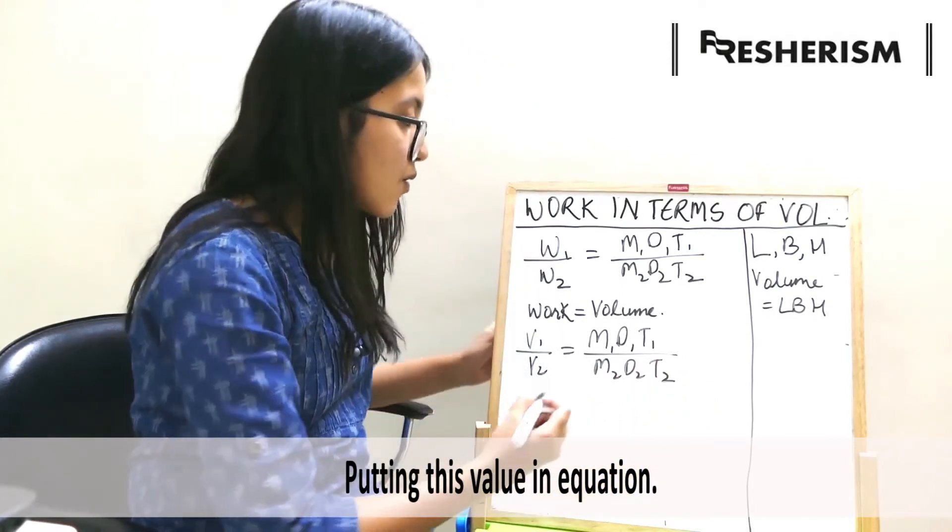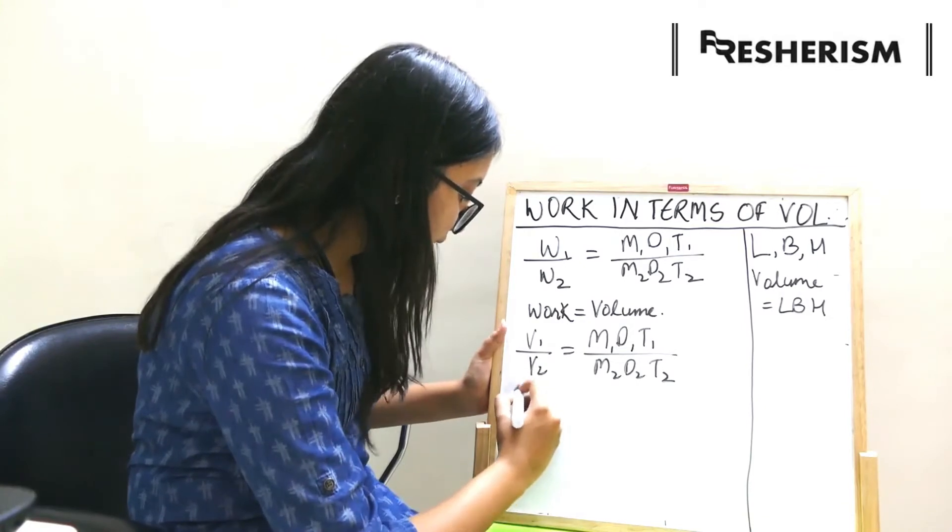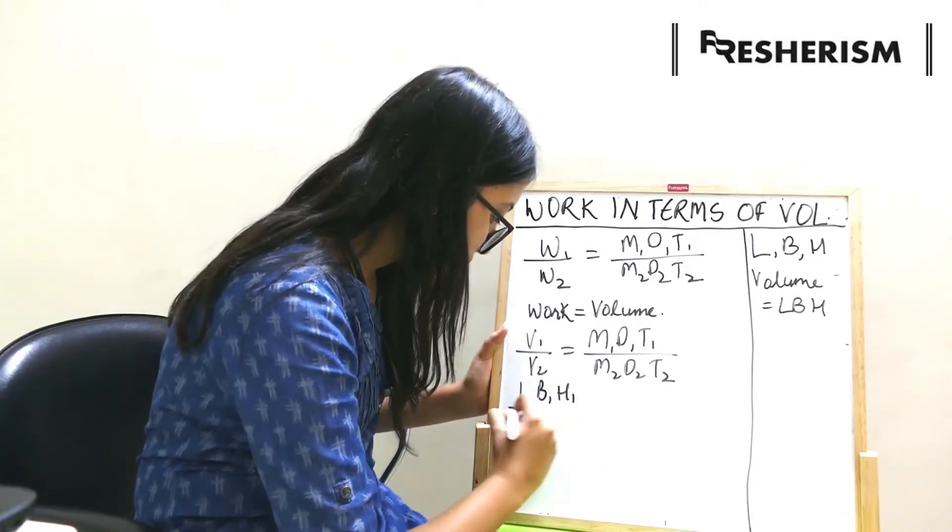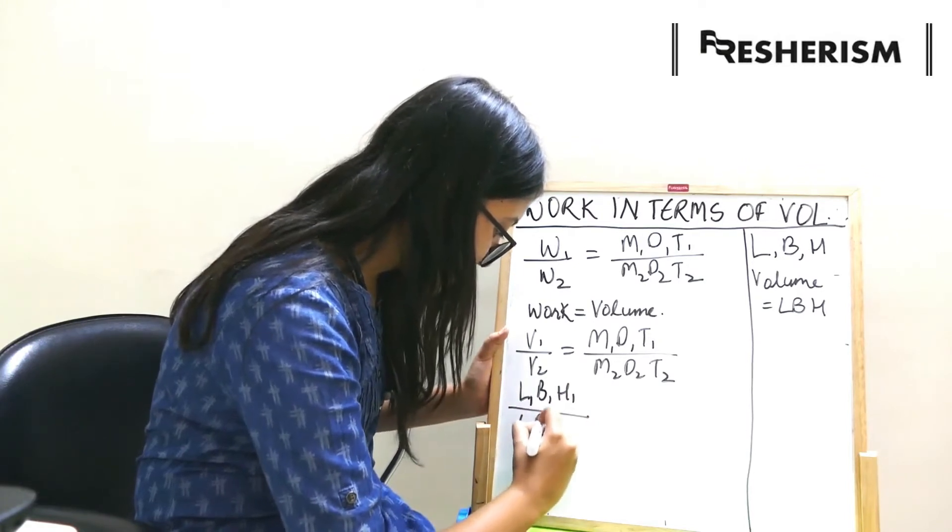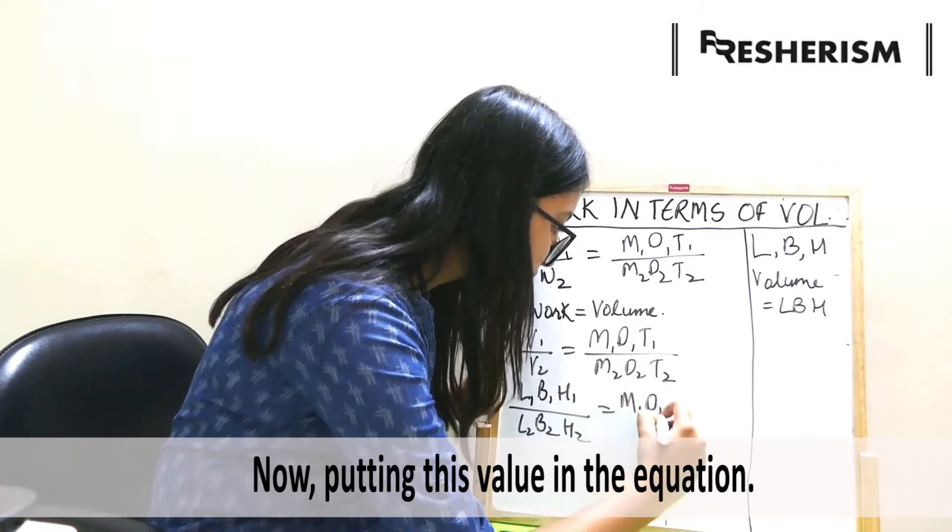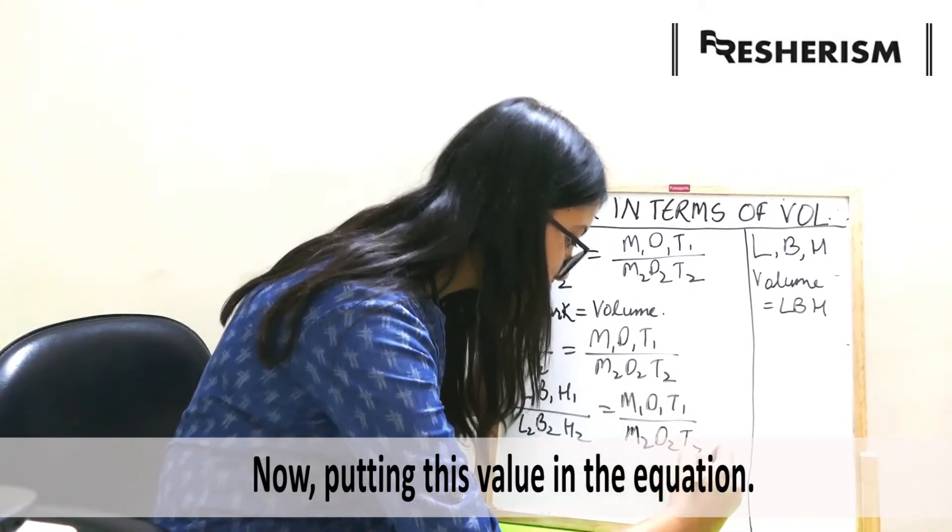v1 upon v2 will be equal to m1 d1 t1 upon m2 d2 t2. Right? Now, putting this over here as the volume, then it will be l1 b1 h1 upon l2 b2 h2 is equal to m1 d1 t1 upon m2 d2 t2.